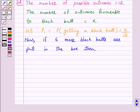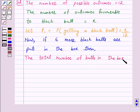then the total number of balls in the box is equal to 12 plus 6, which is equal to 18.